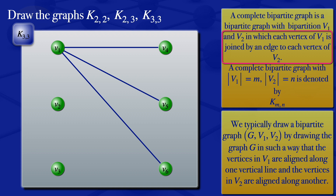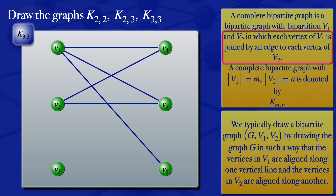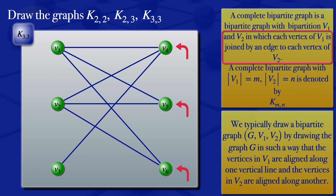V1 now has an edge to all vertices in the second subset V2. Moving to V2, I draw edges between V2 and all vertices: V2 and V4, V2 and V5, V2 and V6. Then going to V3, I draw edges between V3 and all vertices: V3 and V4, V3 and V5, V3 and V6. So that's the complete bipartite graph K3,3 — each vertex of subset V1 is joined by an edge to each vertex of subset V2.